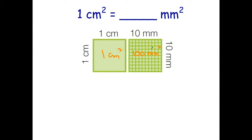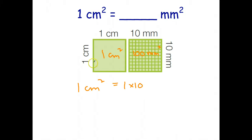Here's the way that I prefer to do it. I think: one centimeter squared. Well, one centimeter is 10 millimeters — that's converting that length to that length — so I have to multiply by 10. So one multiplied by 10. And then I have to convert the width of one centimeter into 10 millimeters, so I multiply by 10 a second time. And I'm reminded of that because I've got a 2 there.